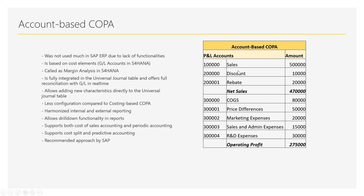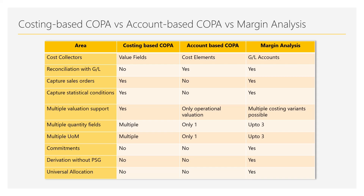On the right side you can see a sample report from account-based COPA. Comparing it with the costing-based COPA report from the previous video, there are no value fields here. All values are directly coming from your P&L GL accounts — your cost elements. This illustrates what we mean when we say account-based COPA is directly linked with the GL and stored in the ACDOCA table.